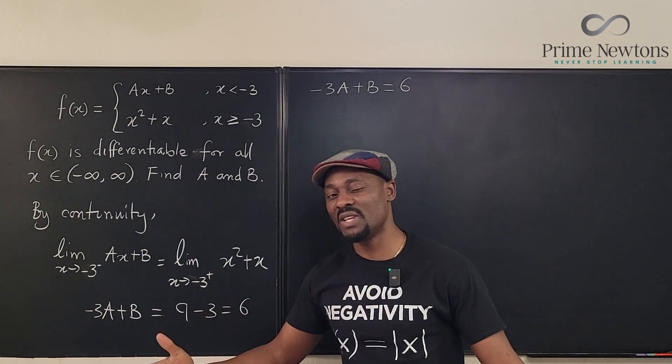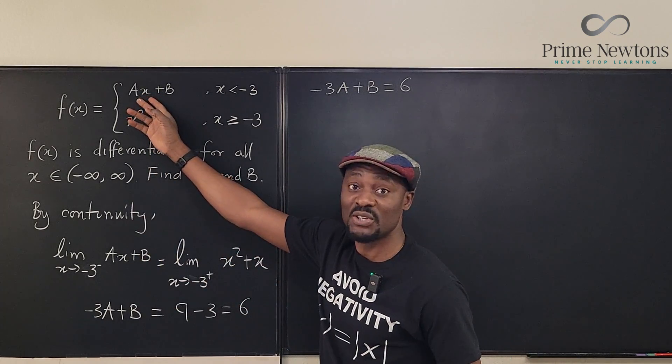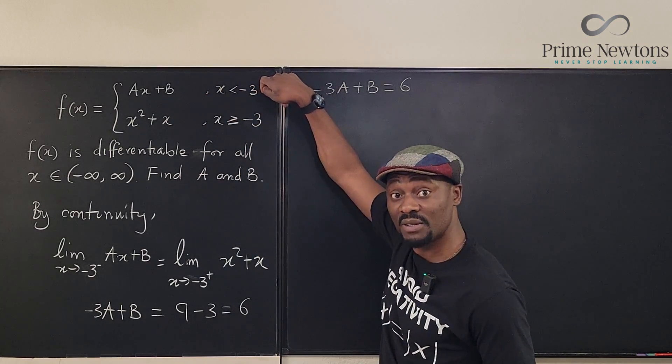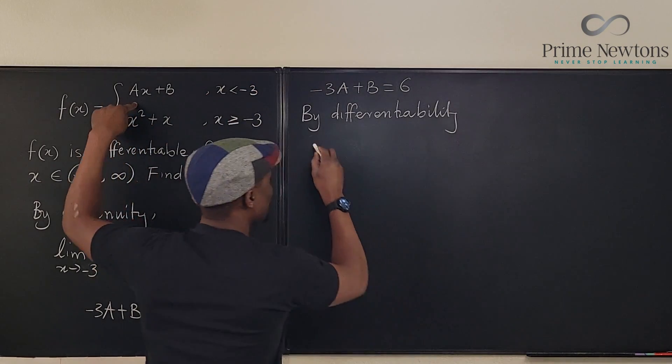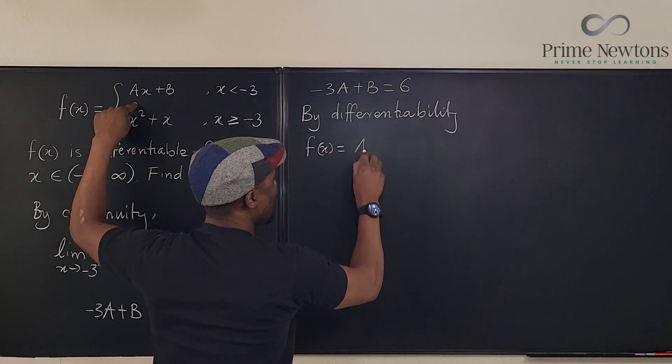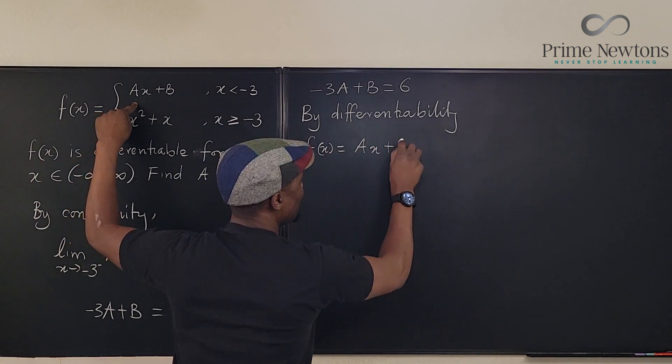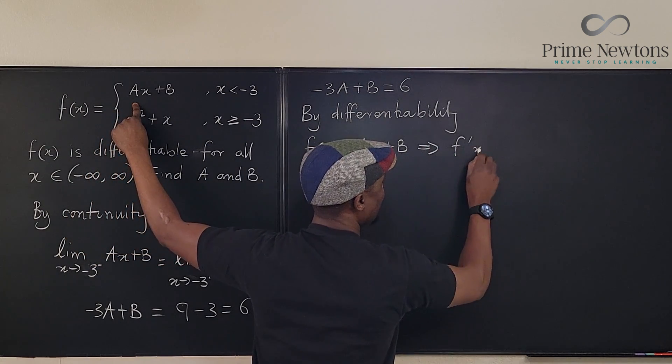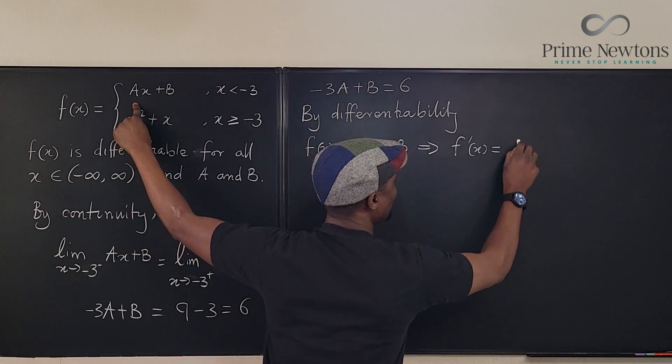you'll get the same slope, whether you use this function or this function, as long as it is at the same point, negative 3. We're going to take the derivative of this, we're going to say f of x equals ax plus b, which implies f prime of x is equal to a.